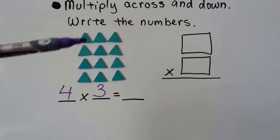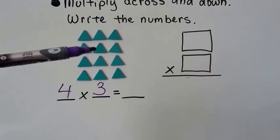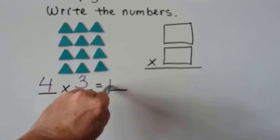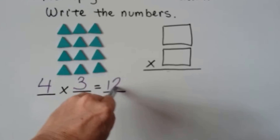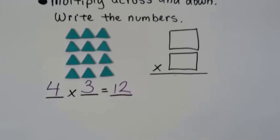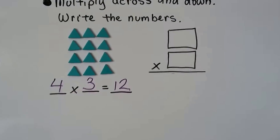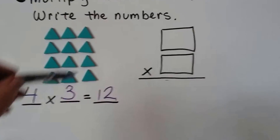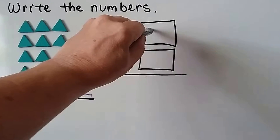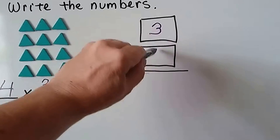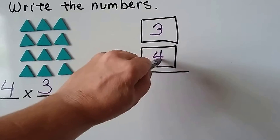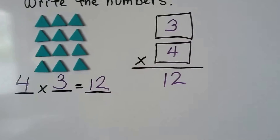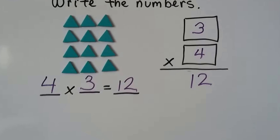Counting them all: three, four, five, six, seven, eight, nine, ten, eleven, twelve. We can also write this vertically: three times four equals twelve.